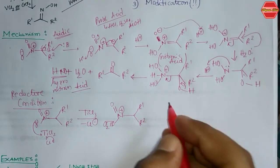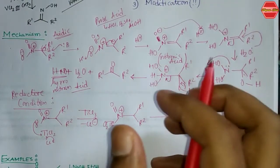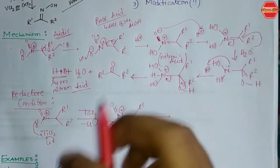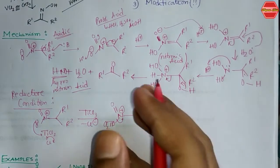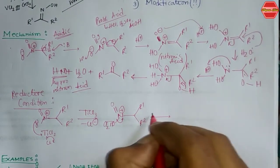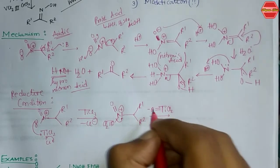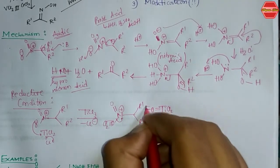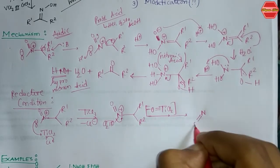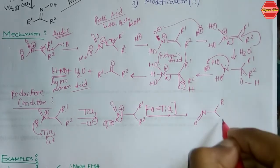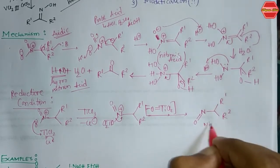Because titanium and oxygen generally form a strong bond, the N–O bond to titanium leaves the system as TiCl₂=O. After that, the nitrogen-containing fragment loses this moiety, giving a nitroso compound as the intermediate.